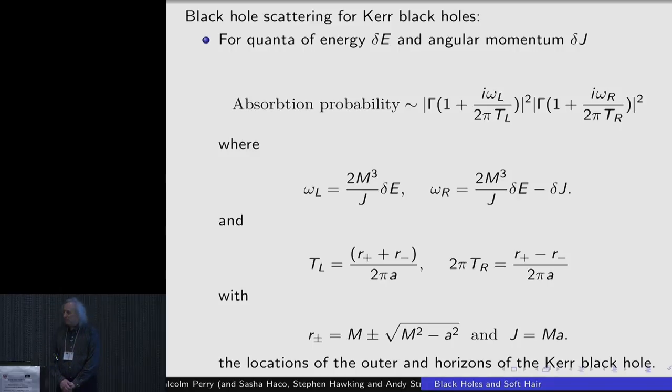So let's change tack for a moment and think about some classical calculations in the curved black hole space-time where you're going to look at the absorption probability for particles of energy delta e and angular momentum delta j. So you can look this up in all kinds of places, the general books, or really follows on from the work of Teukolsky and Press and their friends. The absorption probability contains some numerical factors outside the front of this, and together with two things that involve gamma functions. So this is the modulus, square modulus of 1 plus i omega L over 2 pi T_L and 1 plus i omega R over 2 pi T_R.